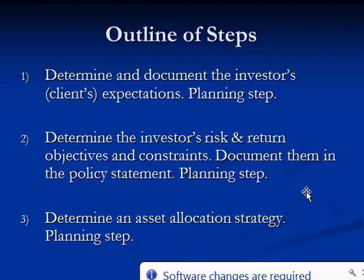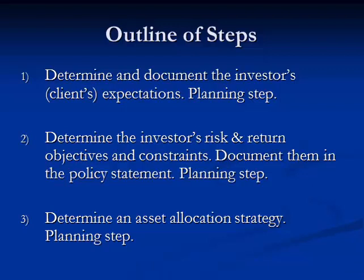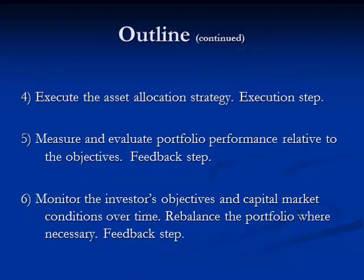Item three is to determine your asset allocation strategy — this is a planning step. Item four is to execute the asset allocation strategy, which you'll do in StockTrack. So when you say you have 40% in stocks, that translates into $400,000 worth of stocks showing up in your StockTrack portfolio. You'll execute things through StockTrack, buying assets to match your asset allocation.